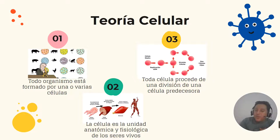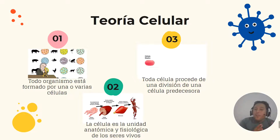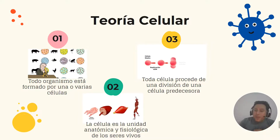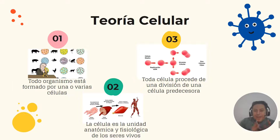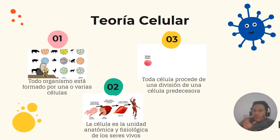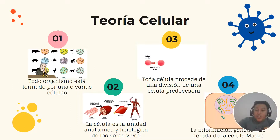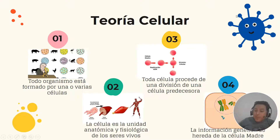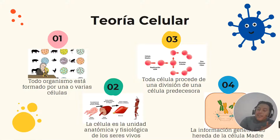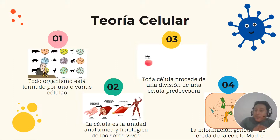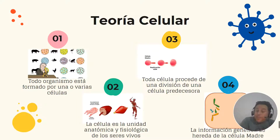El tercer enunciado dice que toda célula procede de la división de una célula predecesora, vale decir, de una célula madre, heredando de ésta todas sus características, incluso sus características genéticas. El cuarto enunciado dice que la información genética de una célula es heredada de la célula madre o de la célula predecesora, junto con todas sus demás características.